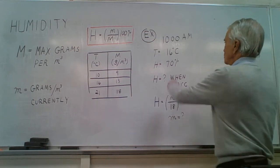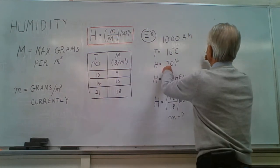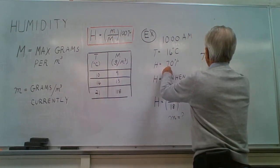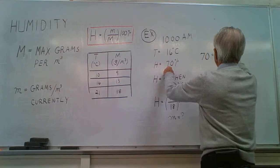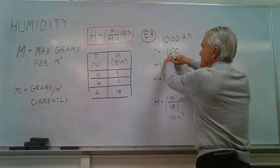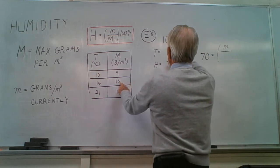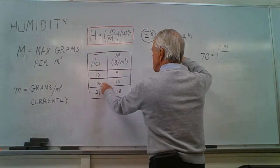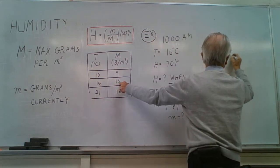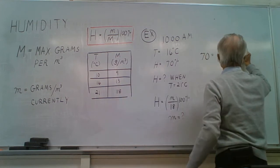Well we know from this equation that 70 equals the unknown M divided by capital M which at 16 degrees Celsius is 13, times 100.